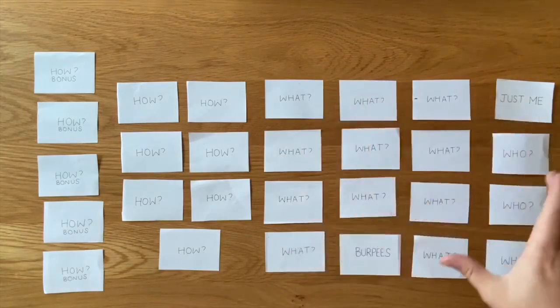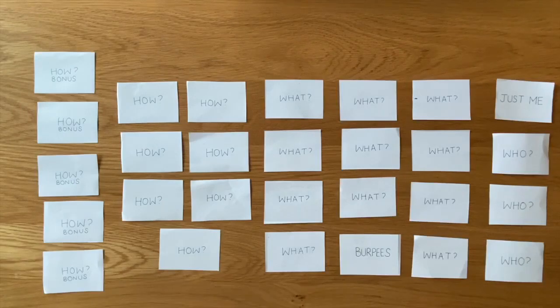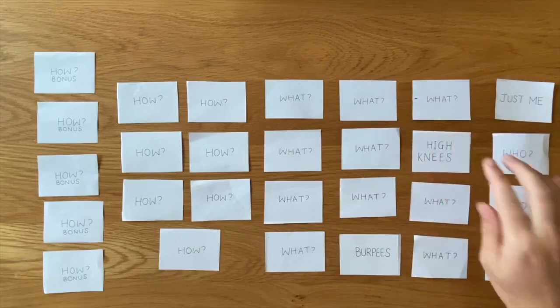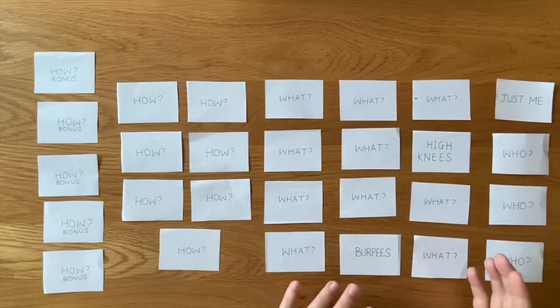Now they choose one of the exercises. Let's say they choose row three, card two. What have we got behind that? We have high knees. Okay so this time it's just a student doing high knees.